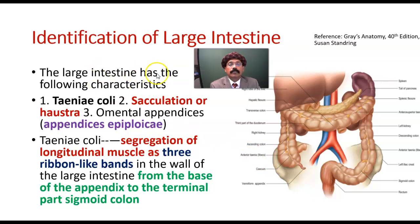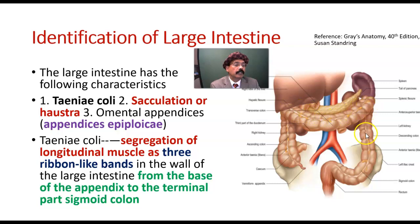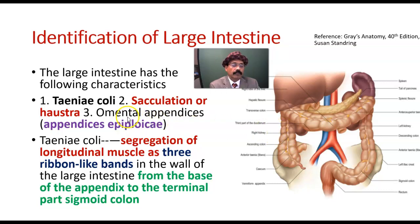The large intestine has the following characteristics: taenia coli, haustration, and appendices epiploicae. These are the taenia coli here — taenia coli, haustration. This is haustration, and on the large intestine we also get omental appendices, also called appendices epiploicae. These are the appendices epiploicae.